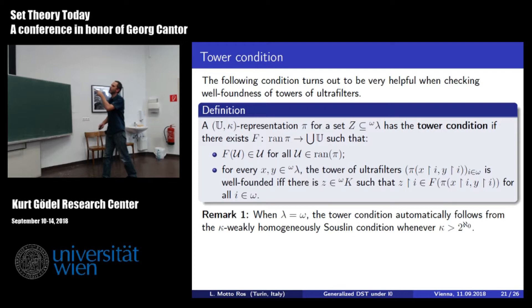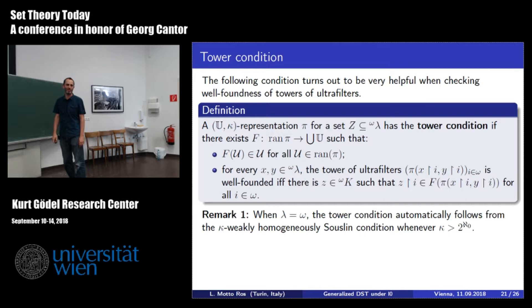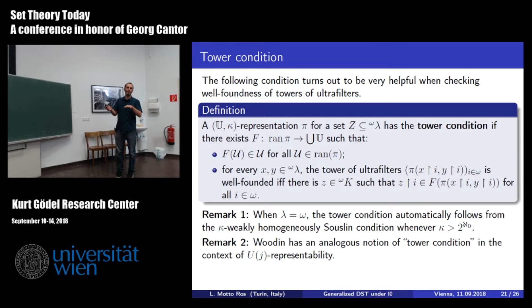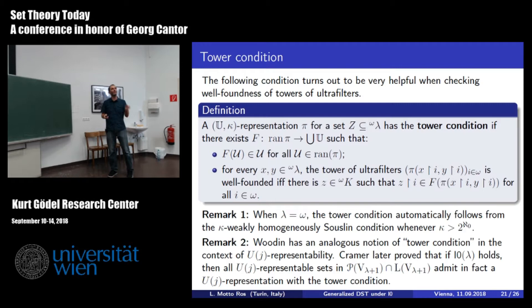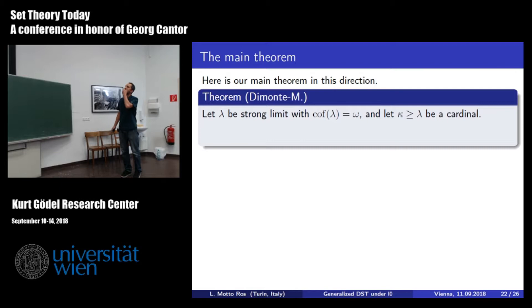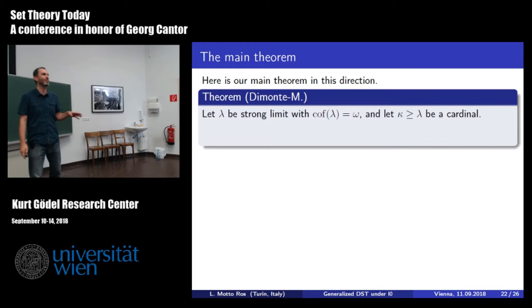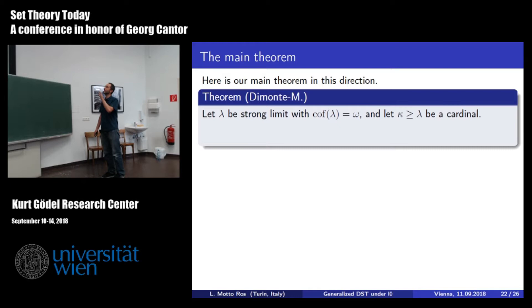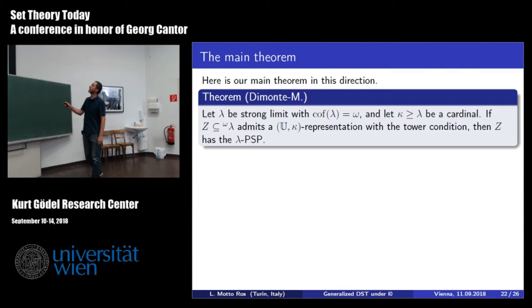In the classical context, this tower condition is automatic because kappa is at least measurable and larger than the continuum—every representation automatically has this tower condition. In Woodin's case, it is not automatic; Woodin couldn't prove it in his paper, but it was later proved by Cramer that if you have a representation, then you get this tower condition for free. Here is our main abstract theorem: suppose you are working with any strong-limit cardinal of cofinality omega—it can be omega itself, or Woodin's lambda in I0, or anything else—and take some level of completeness kappa at least lambda. Then every set in lambda^omega which is UK-representable with this tower condition must satisfy the lambda-perfect set property.